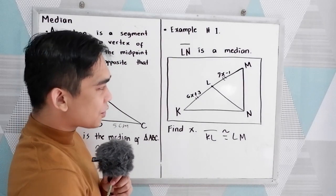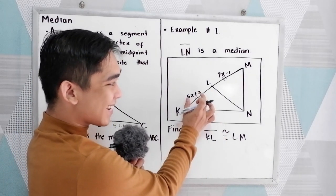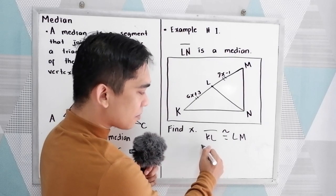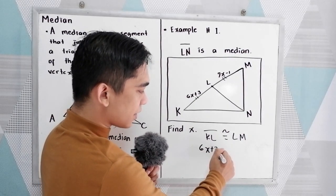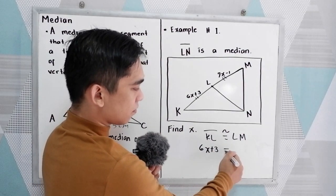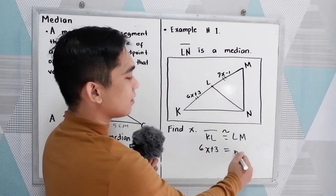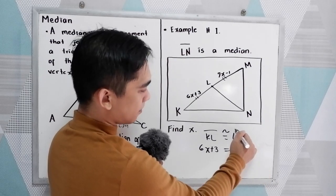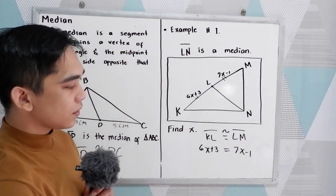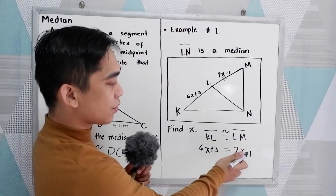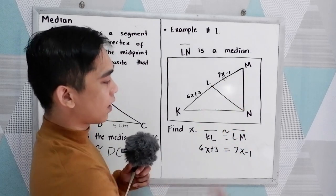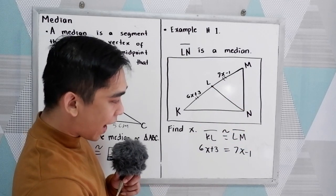We know that the measure of KL is 6x plus 3. So substitute 6x plus 3. It's equal to 7x minus 1. They are equal. Now solve for X.